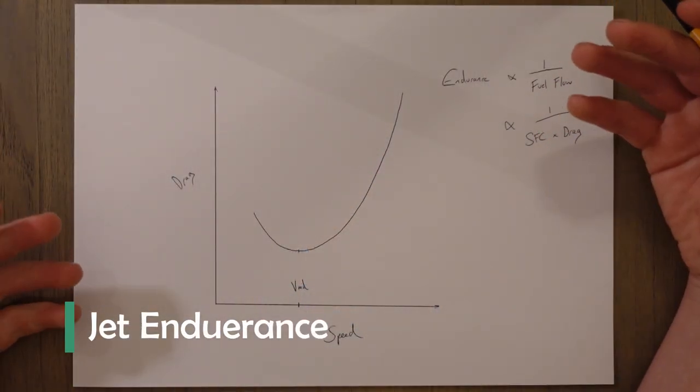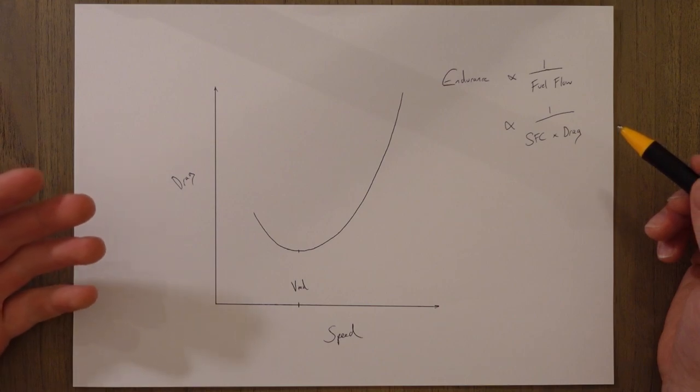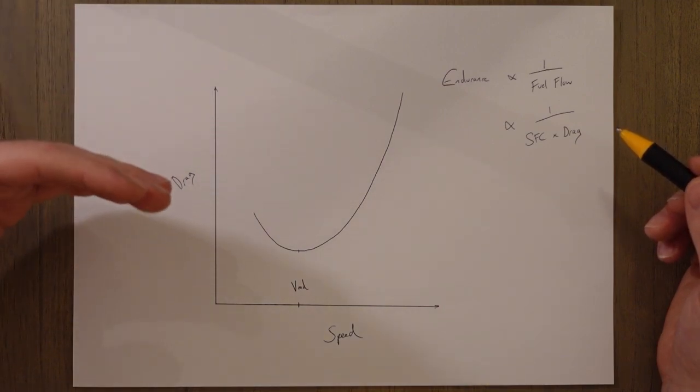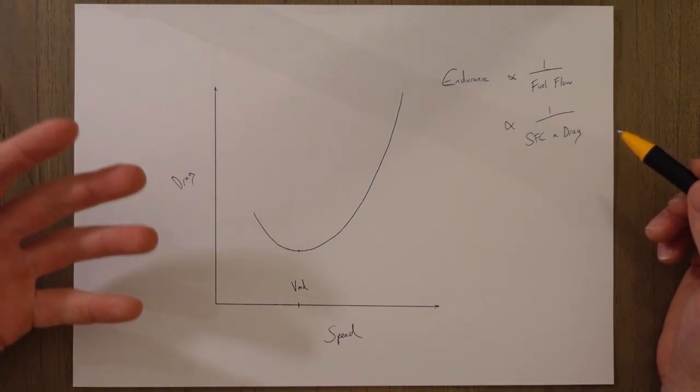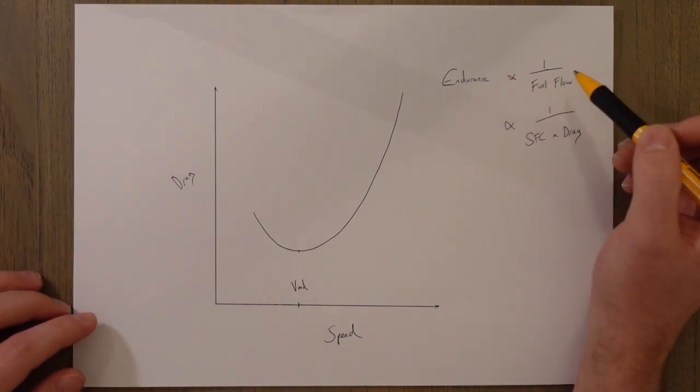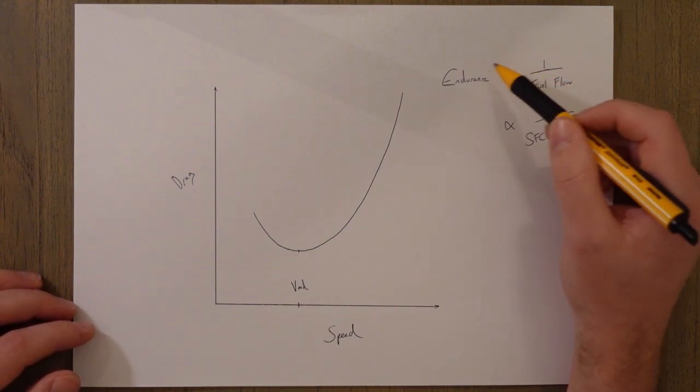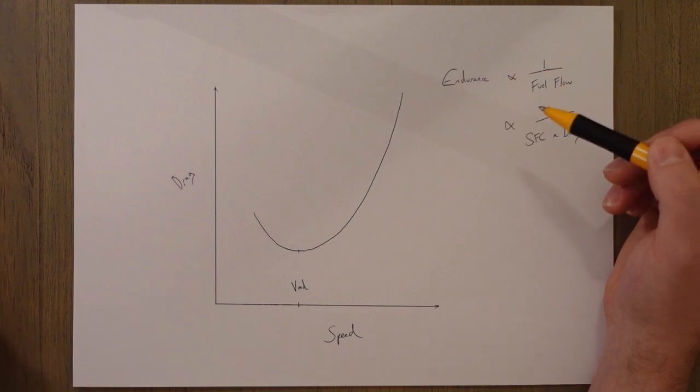The time that an aircraft can stay in the air is known as endurance and to maximize our endurance we basically need to minimize the fuel flow into the engines and therefore the fuel burn. This means that endurance is inversely proportional to the fuel flow because if we have more fuel flow we have less endurance, inverse proportions.